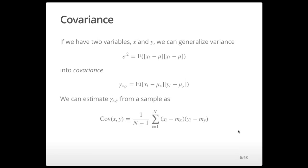We can estimate the covariance of x and y from a sample similarly to how we would estimate a variance. Rather than squaring just one deviation, we multiply the deviations of x minus the mean by the deviations of y minus the mean. Again, we pay a price in degrees of freedom, so we divide by n minus 1.